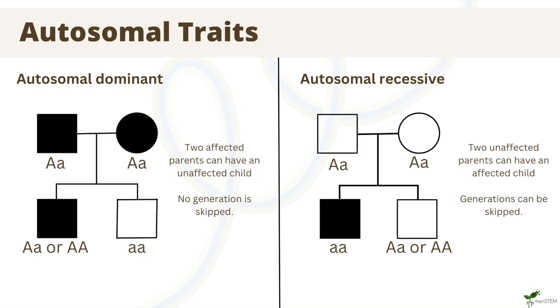We can see generational skipping in the example of a recessive trait presented on this slide, where neither of the parents have the trait but the child does. Thus, the trait has skipped the parents' generation.